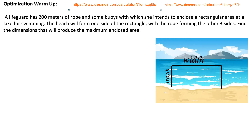Here's a warm-up question to get us ready for the optimization section of this calculus course. We could probably solve this without calculus, but it'll be useful to use our knowledge of calculus so we understand the strategy for more complicated optimization problems. The question reads: a lifeguard has 200 meters of rope and some buoys with which she intends to enclose a rectangular area at a lake for swimming. The beach will form one side of the rectangle, with the rope forming the other three sides.